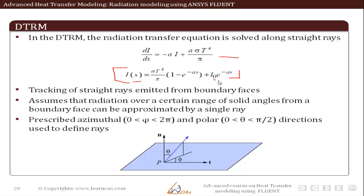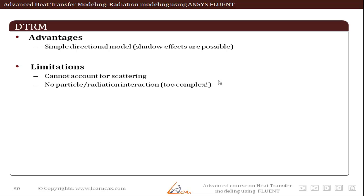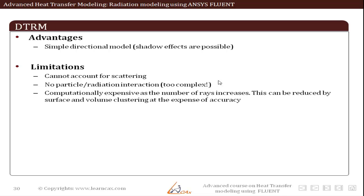The fewer the rays that are traced, the lesser the accuracy, and if the mesh is coarse the accuracy also reduces. The biggest advantage of the DTRM is that it has a directional sense — it considers radiation in terms of ray tracing. However, this model has limitations: it cannot account for scattering like the P1 model, it does not consider particle and radiation interaction, and as it traces rays it is computationally more expensive than the P1 model.